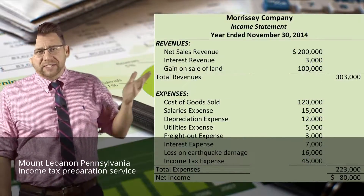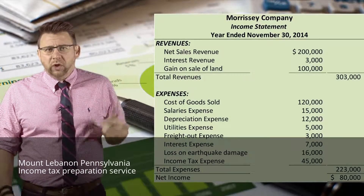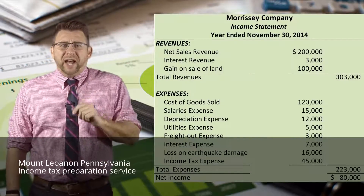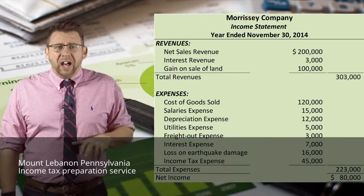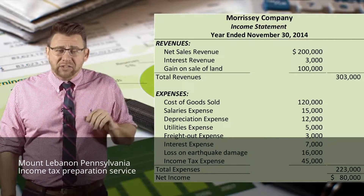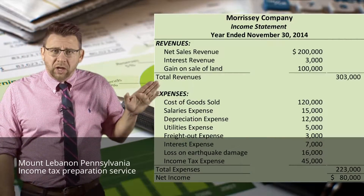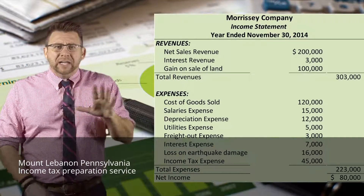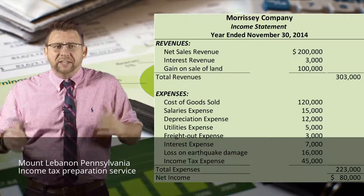Here is an example of a single-step income statement. You can see that revenues and gains, which we will learn about later, are all listed together. Same with expenses. Let me point out one area of the presentation that some students struggle with. Often when we report financial statements, if we have a list of common accounts like revenues and expenses, we will list them all in one column and carry the total out to the far column. That does not mean the columns represent debit and credit — not when we are presenting the financial statements.